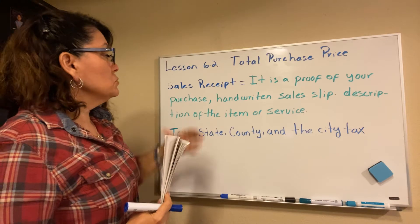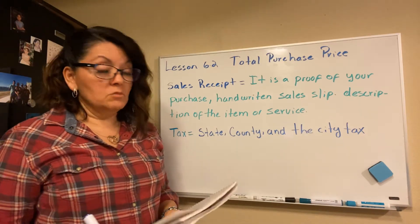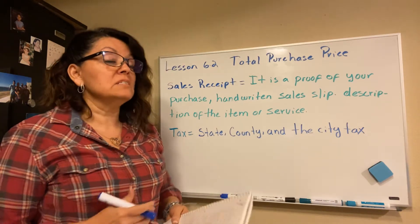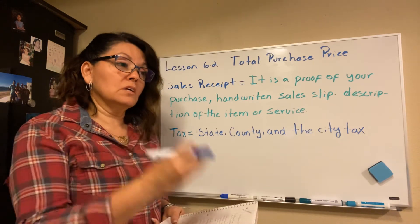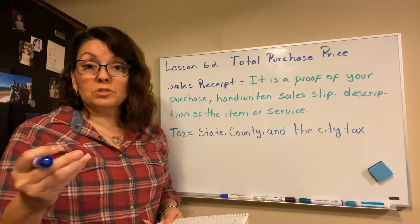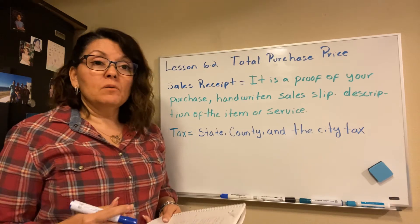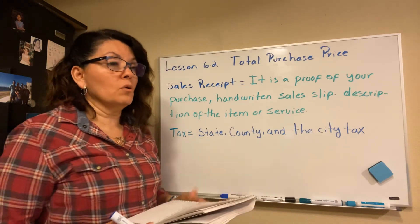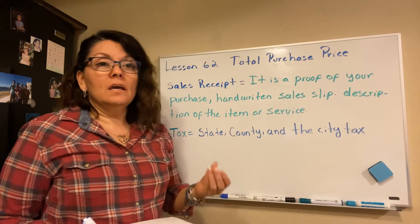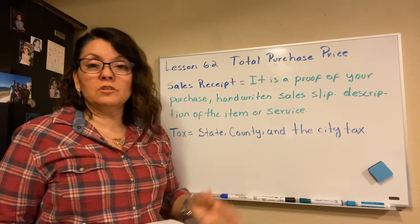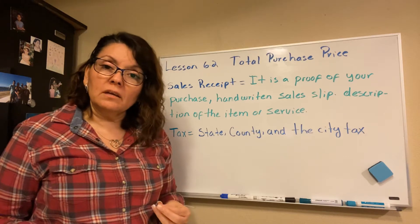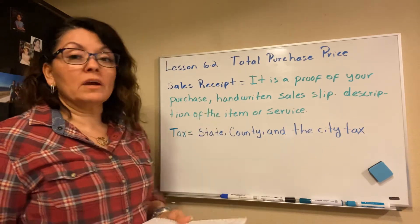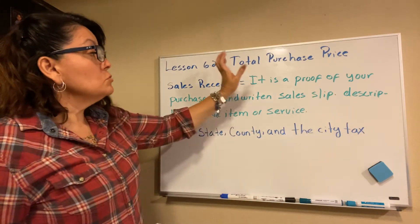The objective is: the student will be able to calculate the total purchase price — what you're actually paying at the end. For example, if you go to a store like JCPenney or Macy's and see a pair of shoes that costs $120, you're not going to pay $120. You're going to pay $120 plus the taxes. That is the total purchase price.